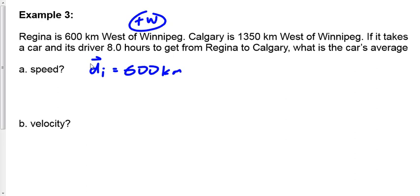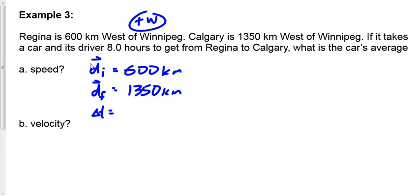I'm going to make west positive. The initial position d_initial is 600 kilometers west of Winnipeg; the final position is 1350 kilometers west of Winnipeg. My time interval Δt is 8.0 hours — that's a delta T, not a clock time of 8 o'clock, but how much time has elapsed.